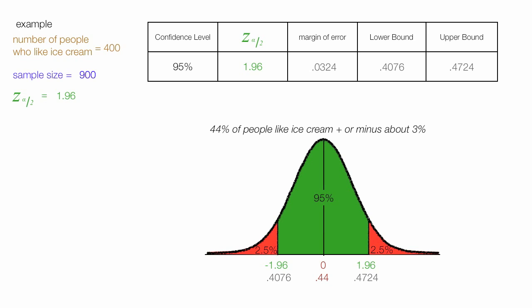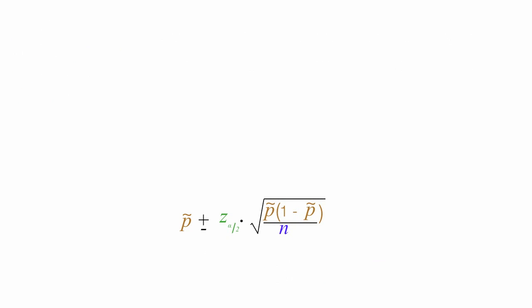You could also say 44% of people like ice cream, plus or minus about 3%. I'm not sure I would use the plus sign and minus word. But anyway, nonetheless, I showed you this little equation.